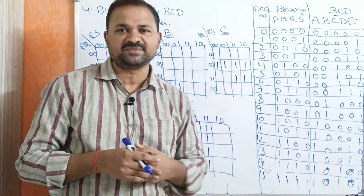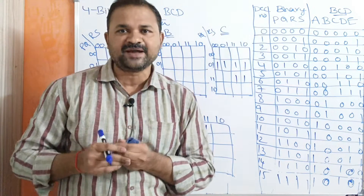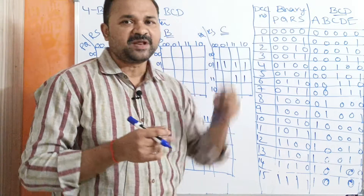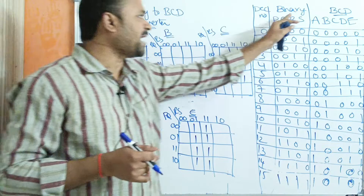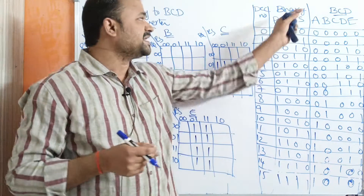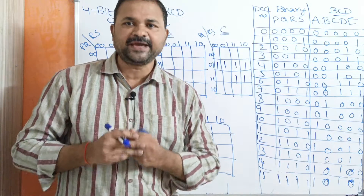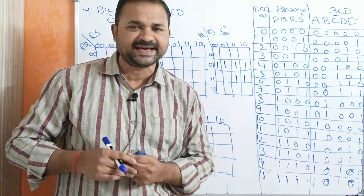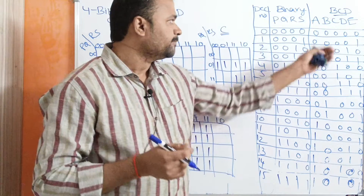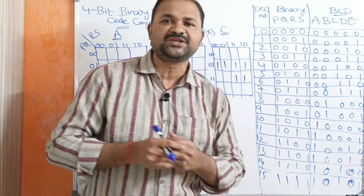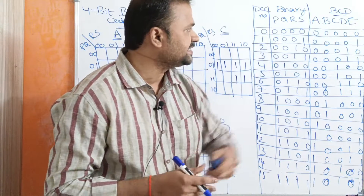Here we have three columns. The first column represents decimal number. The second column represents the input code, which is a binary number represented using 4-bits: P, Q, R, and S. The third column is BCD code, represented using 5-bits: A, B, C, D, and E.